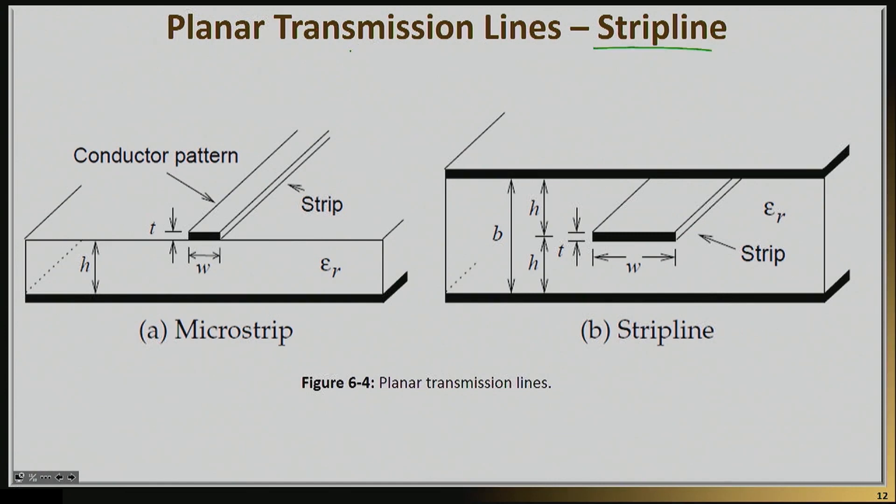The stripline is basically almost the same as the microstrip, except that we essentially fill the other half space, that before was unfilled, with the same type of dielectric. So now εr is everywhere, it surrounds the stripline. The stripline is basically in between two grounds. So you have a ground on the top and you have a ground on the bottom.